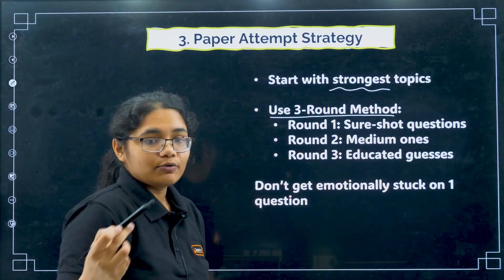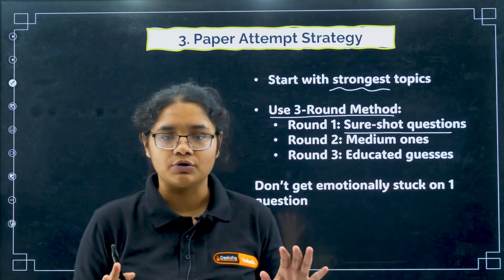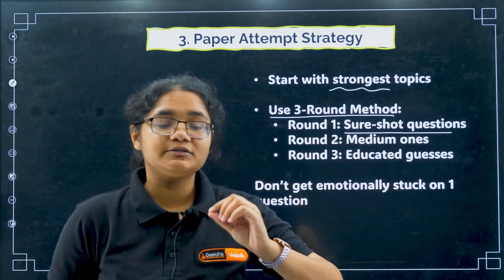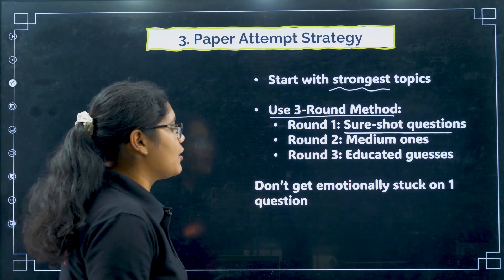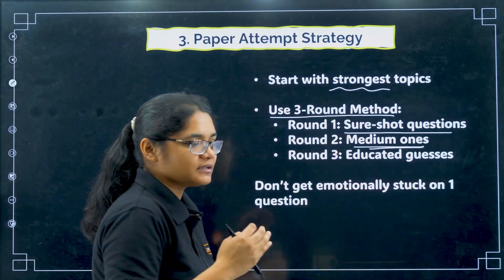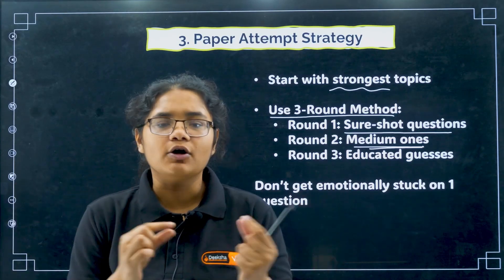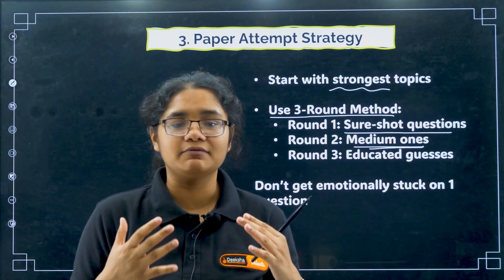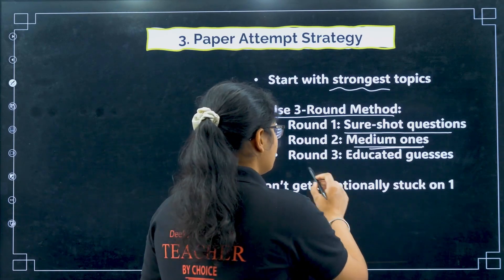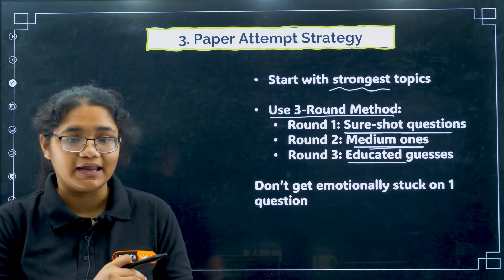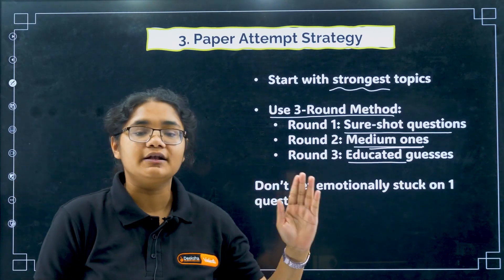Next, use a three-round method. In the first round, do all questions you are absolutely sure about and do not spend any time on doubtful questions. In the second round, tackle lengthy questions or those with calculation errors where you know the concept but need more time. In the third round, attempt questions on which you have no idea and apply a smart guessing strategy there.